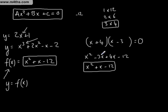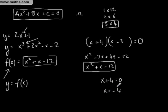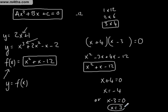What this says is x + 4 = 0 or x - 3 = 0. If x + 4 = 0, solving it in a linear way gives x = -4. Or if x - 3 = 0, then adding 3 to both sides gives x = +3. So we have two solutions to the quadratic equation where x² + x - 12 = 0.